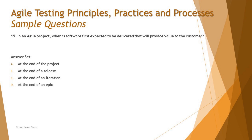Let's look at the last question for the day — Question 15. Again in an agile project: when is software first expected to be delivered that will provide value to the customer? That's a very twisted statement. You may think of a number of possibilities — is it about giving a deliverable, handing over the product, acceptance testing, or just a demonstration? You really have to deep dive and understand: at what point is the very first look of the code given to the customer?